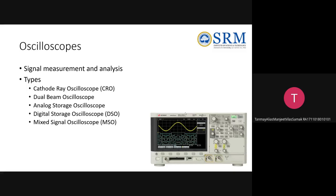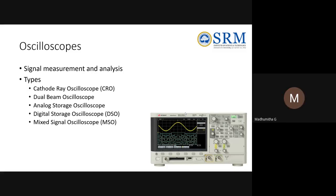Then there was a dual beam oscilloscope, which was an advancement of the CRO. It consisted of two deflectors so that two signals could be visible at a time on the display. Then there were analog storage oscilloscopes. In analog storage oscilloscopes, there are two basic ways to store the waveform.